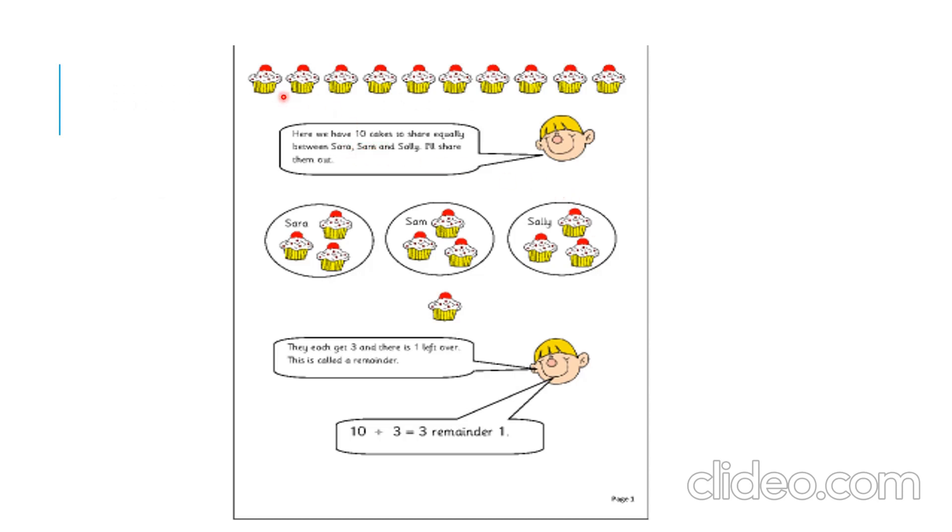Here, we have 10 cakes. See here, 1, 2, 3, 4, 5, 6, 7, 8, 9, 10 cakes are there. So, after equally distributing, one is left over. They each get 3 and there is one left over. This is called as remainder. We can write the division sentence as 10, that means 10 cakes divided among 3. That is Sarah, Sam and Sally. Each got 3 cakes and one left over is 1. That is remainder.